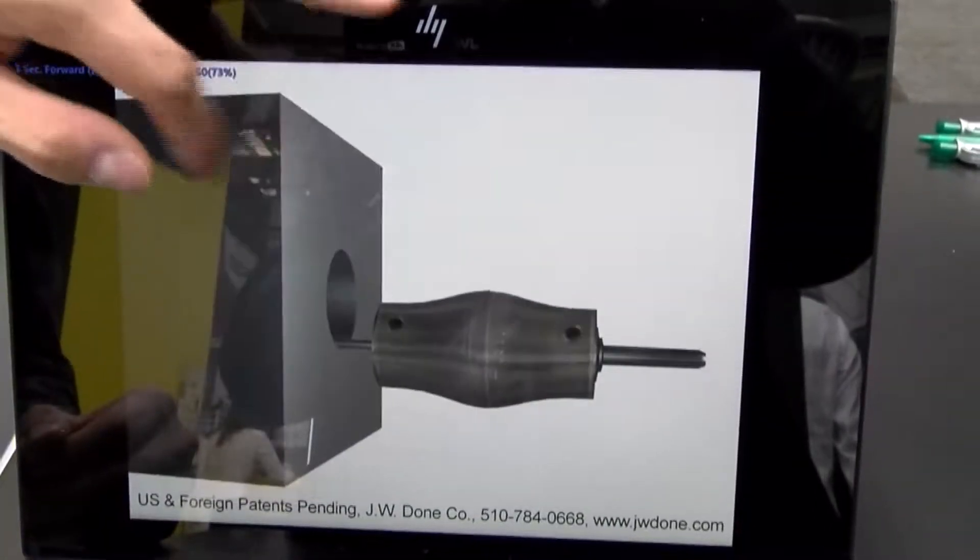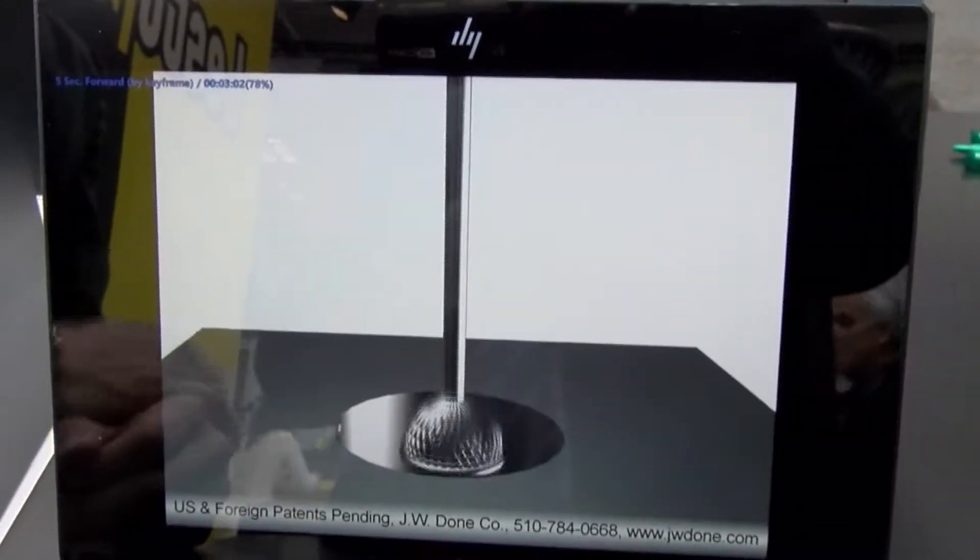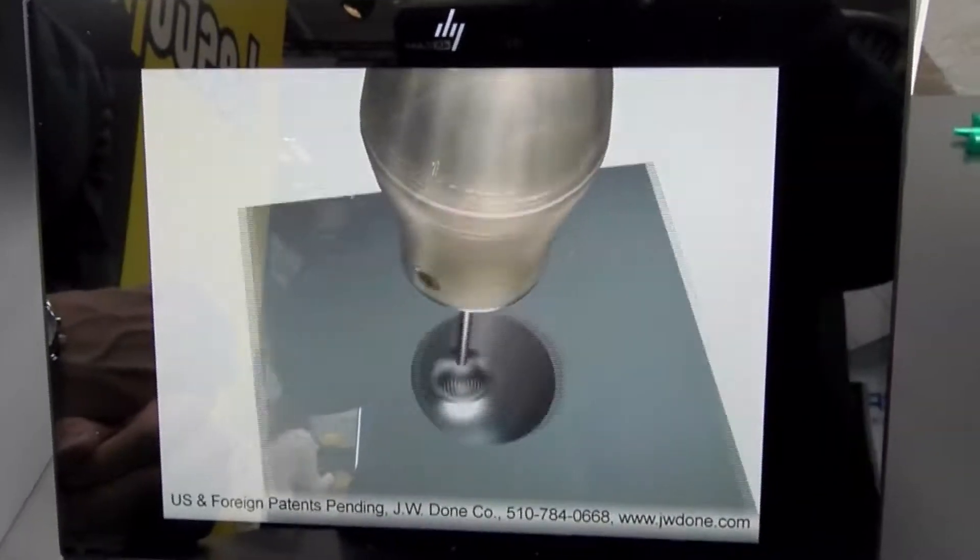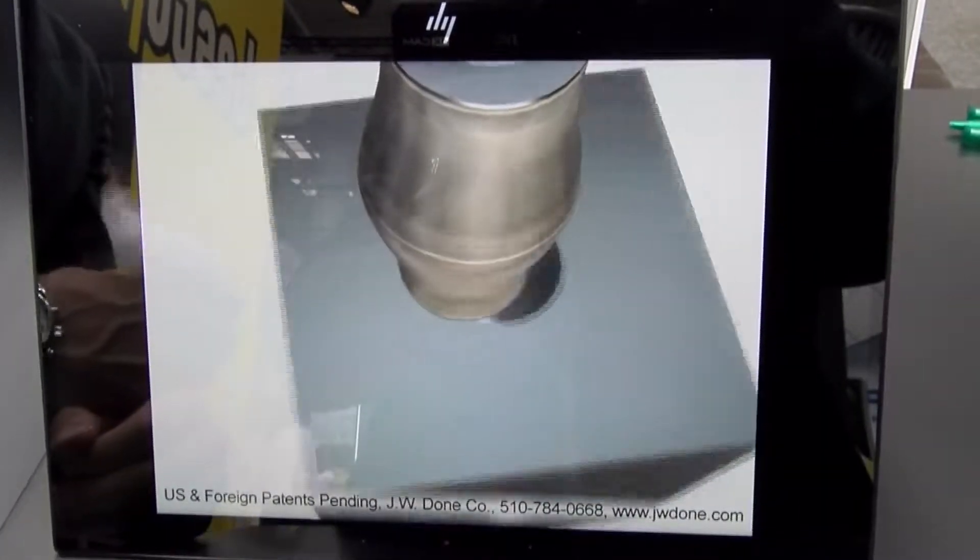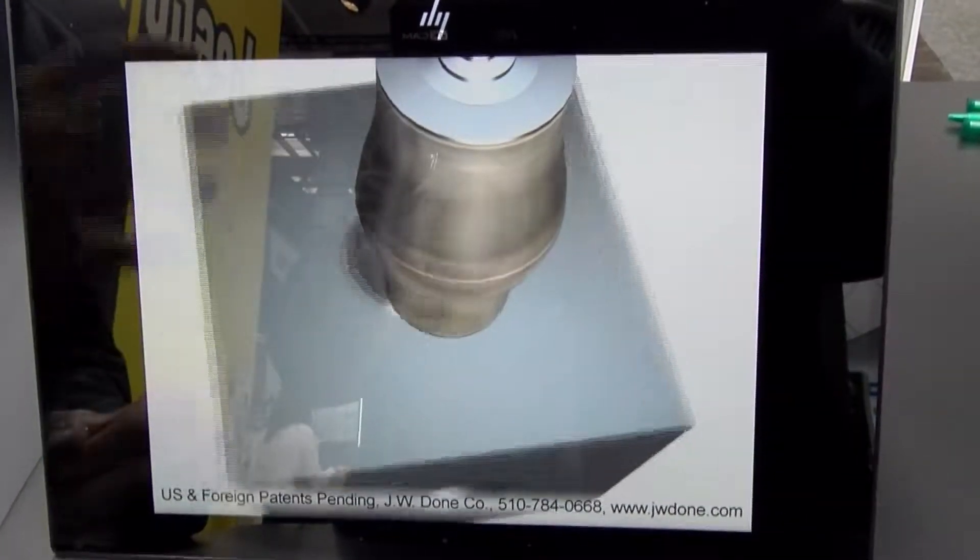We can fast forward a little bit to a mill setting. Same exact principle. We're making a threading motion on the inside of a hole. Either we interpolate the tool around that hole ID or the tool is stationary and the part is rotating.